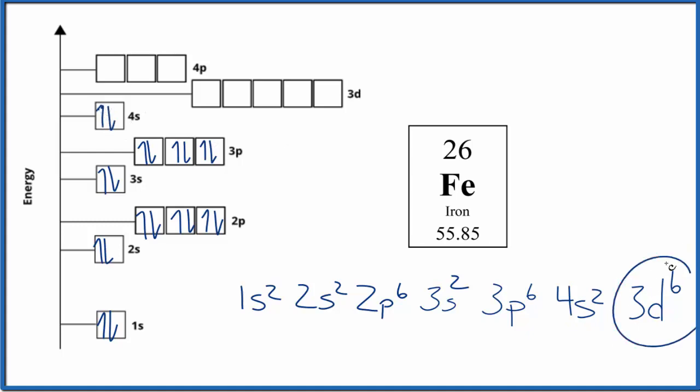Finally, our 3d⁶: we spread them out before pairing them up. We've used 5, and then there's that 6. This is the atomic orbital diagram for iron.